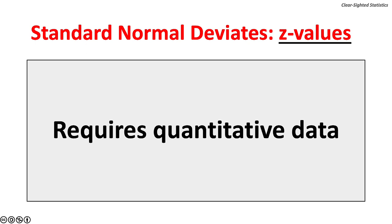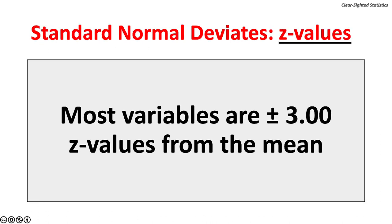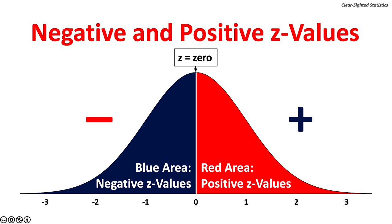Z-values require quantitative data. They cannot be calculated with qualitative data. Here is the z-value formula for the population: z equals the random variable x minus the population mean mu, over the population standard deviation sigma. Most variables are within plus or minus three z-values from the mean. Z-values are signed — they can be positive or negative. Here is a normal curve which charts the standard normal distribution.